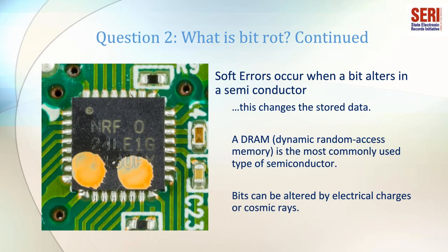First, soft errors occur when a bit alters in a semiconductor, thus changing the stored data or program code. Semiconductors are an essential component of the microprocessors that start working whenever we power up a server, desktop, laptop, mobile phone, or other digital device. In the most commonly used type of semiconductor, a dynamic random access memory (DRAM), BitRot may occur when the small electric charge of a bit disperses and alters the program code or stored data.